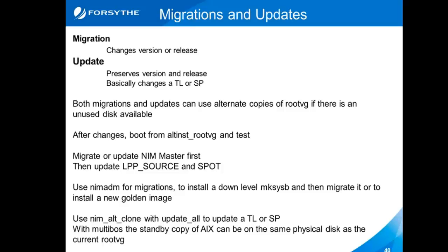Both migrations and updates do not have to be done on the live disk. They could be done on an alternate root VG. We're going to talk a little bit about alternate root VG and alternate disk install, because those combined with NIM give you the ability to basically do these upgrades and installs without affecting your production system, as long as you understand that it changes your boot list and things like that.